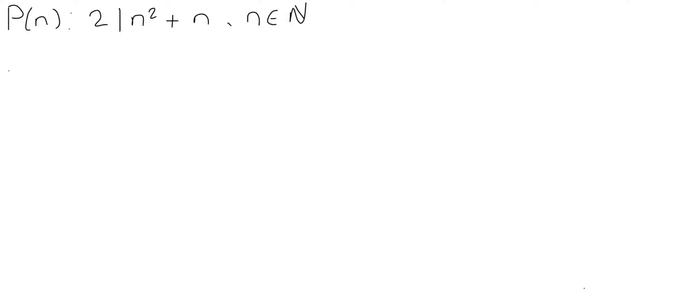So we're going to start with our base case, which is we're going to consider P(1), and we're going to check if P(1) is true. So P(1) means we've got n equals 1, so we're going to check what the value of n squared plus n is when n equals 1. And that is 1 squared plus 1, which is 1 plus 1, which is 2, and we know that 2 divides 2 obviously. So P(1) is true. That's our base case.